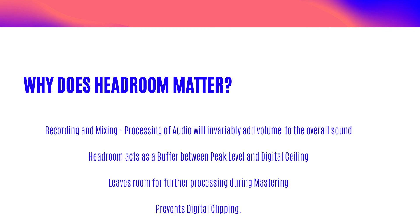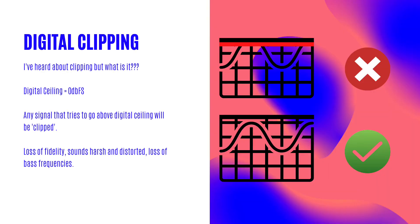Given this, we need to understand the concepts of digital clipping. We have mentioned the digital ceiling being at 0 dBFS. If a sound recorded in the digital domain goes above 0 dBFS on a meter, technically digital audio cannot go past the ceiling, but the waveform becomes clipped at the digital ceiling. What this means is that the top of the transient or peak is cut off at the digital ceiling, creating an undesirable distortion. If your overall mix is running too hot and you clip the master bus, then your mix will lose fidelity, become harsh and distorted, and generally result in a high loss of bass frequencies. Headroom therefore becomes so important as it provides a buffer between the peak level and the digital ceiling to prevent digital clipping.